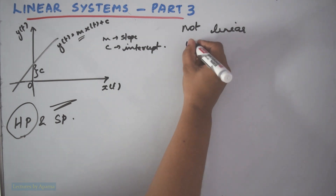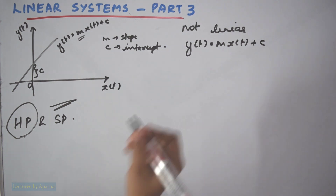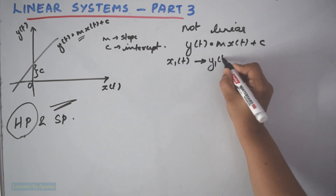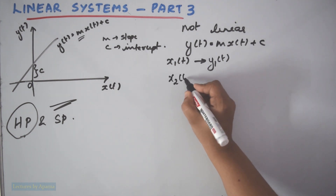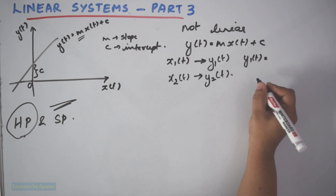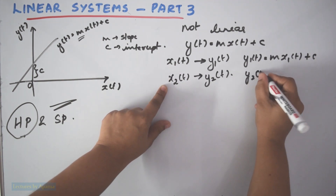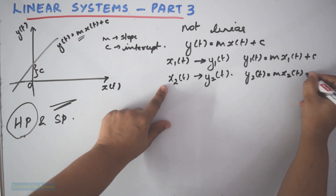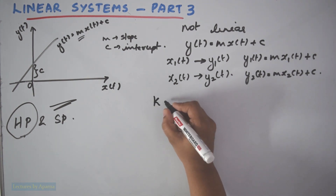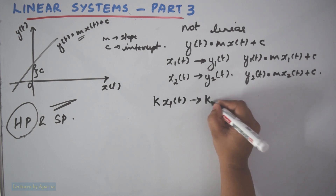Given y(t) = mx(t) + c, when an input x1(t) is given to the system, let the output be y1(t). So the equation for y1(t) will be equal to m·x1(t) + c. To check the homogeneity property, we have to give an input which is k times x1(t). When we give an input k·x1(t), it should give an output which is k times y1(t).